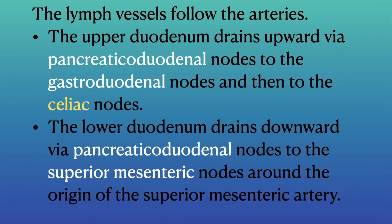The lymph vessels follow the arteries. The upper duodenum drains upward via the pancreaticoduodenal nodes to the gastroduodenal nodes and then to the celiac nodes, while the lower duodenum drains downward via the pancreaticoduodenal nodes to the superior mesenteric nodes around the origin of the superior mesenteric artery.